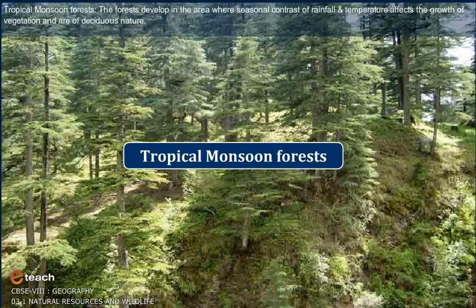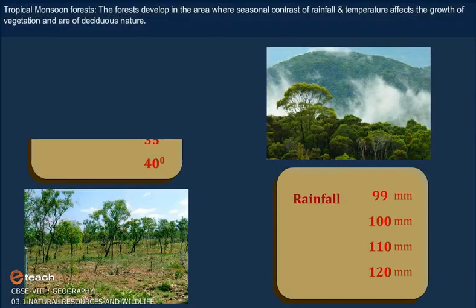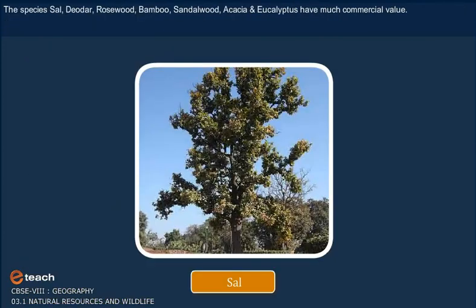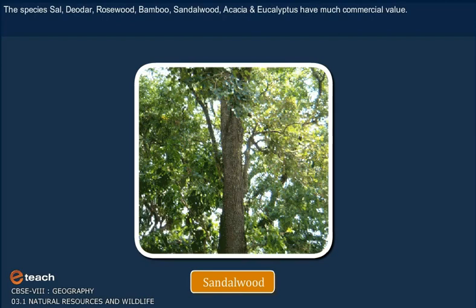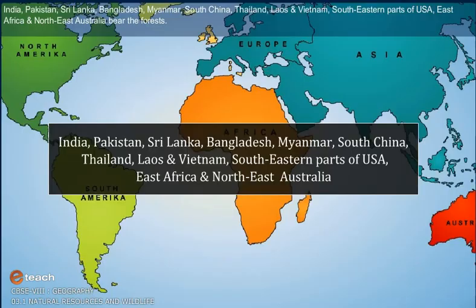Tropical Monsoon Forest. The forests developed in the area where seasonal contrast of rainfall and temperature affects the growth of vegetation and are of deciduous nature. The species sal, deodar, rosewood, bamboo, sandalwood, acacia and eucalyptus have much commercial value.